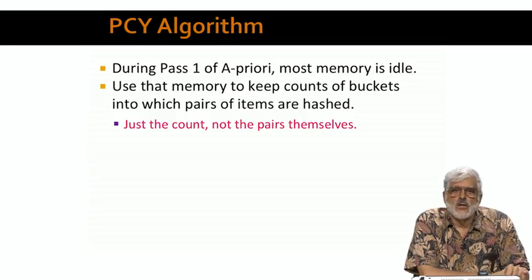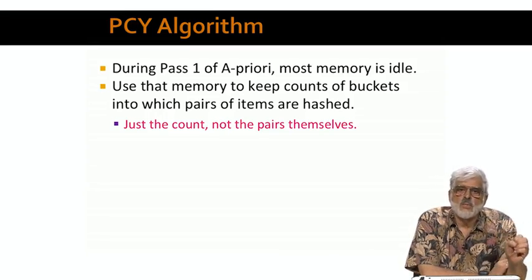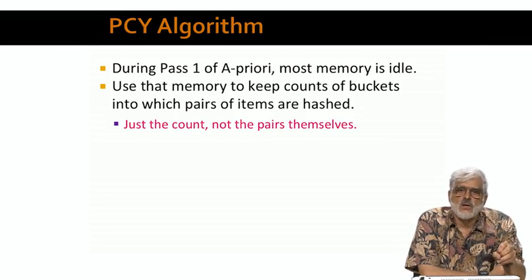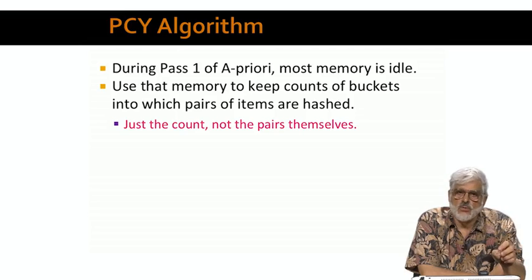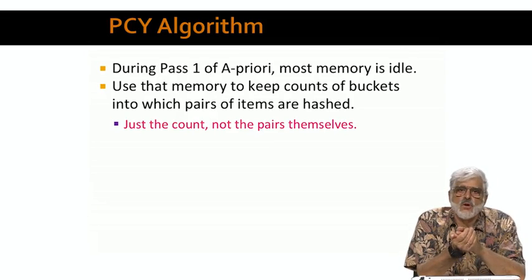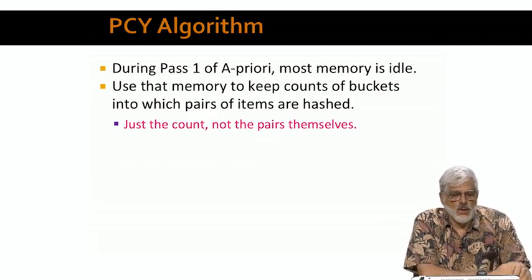What Park, Chen, and Yu suggested was that we could hash all pairs into a large number of buckets. However, these buckets do not hold the pairs themselves — just the count of how many baskets contain pairs that hash to that bucket. Thus, the space needed for a bucket is small. Four bytes is surely sufficient, and we might get away with two bytes if the support threshold is less than 2 to the 16th. Notice that it is not possible to store in main memory all the pairs themselves — we're trying to avoid having to use space for every possible pair.